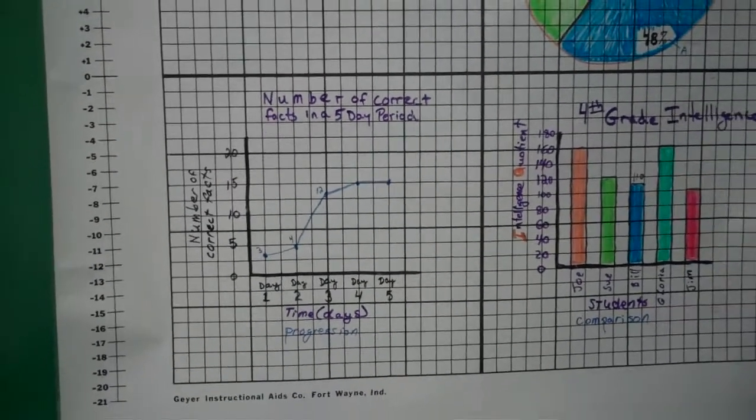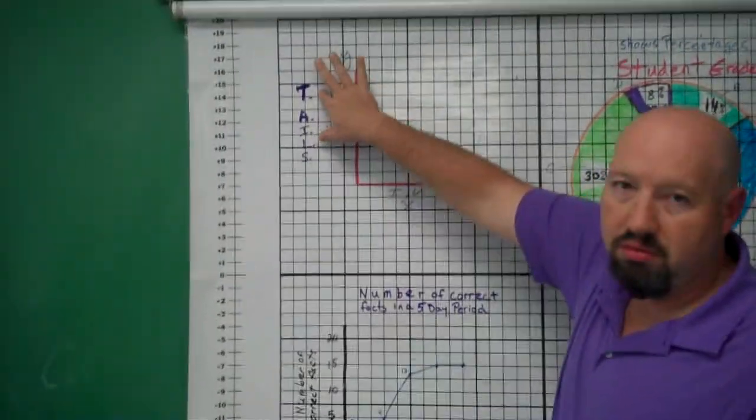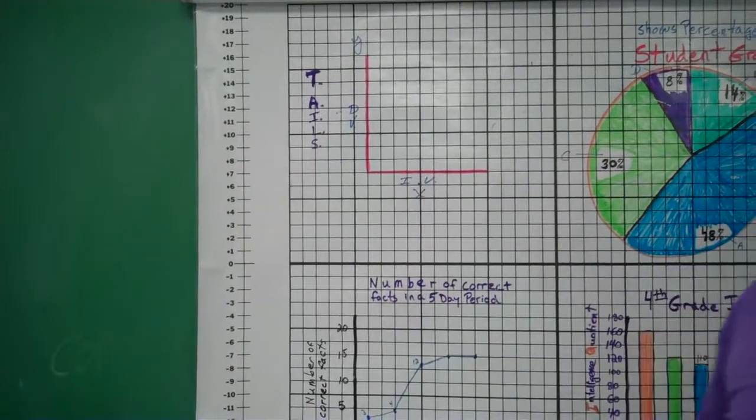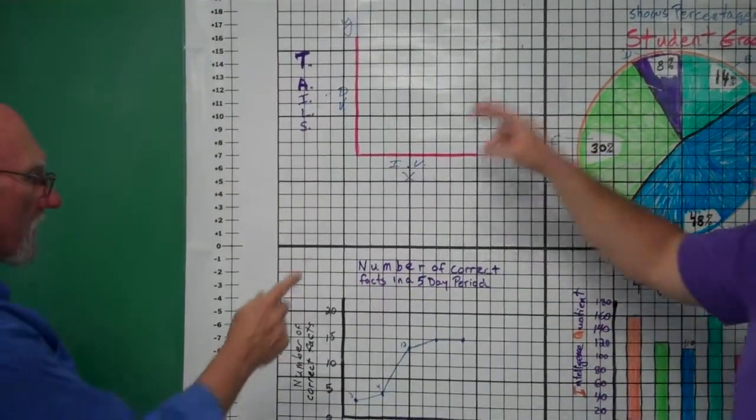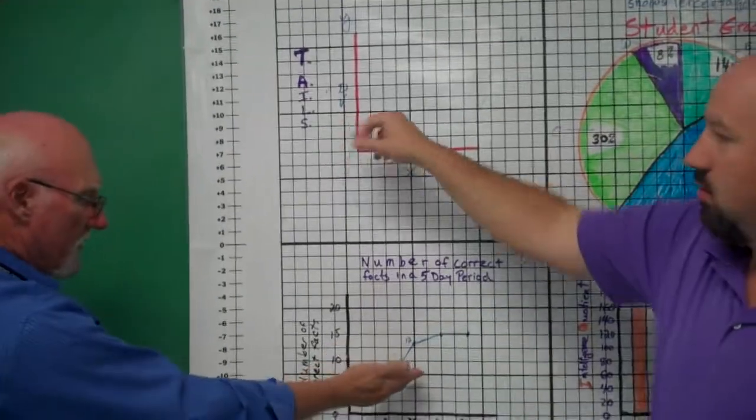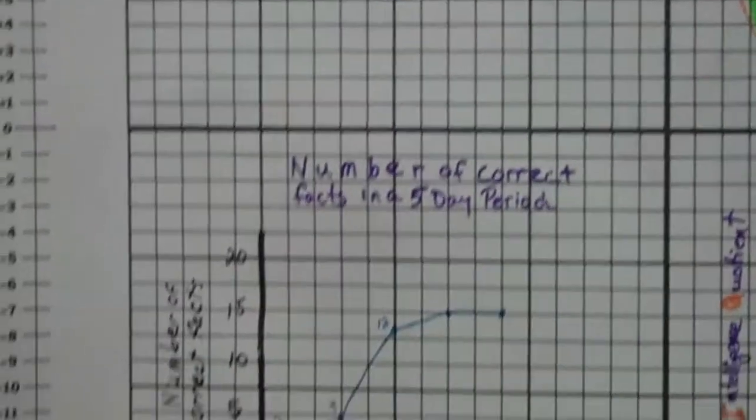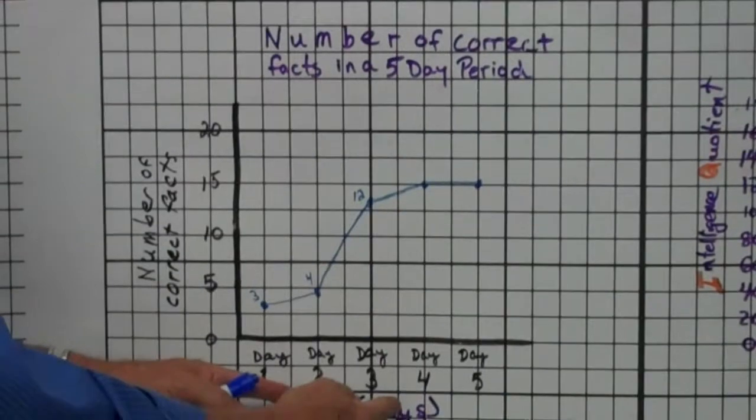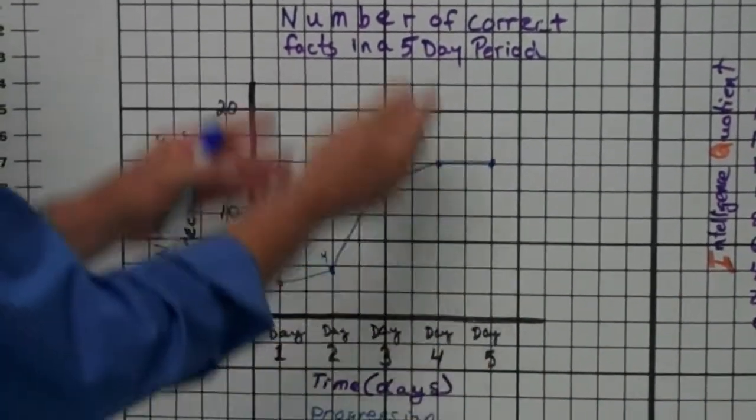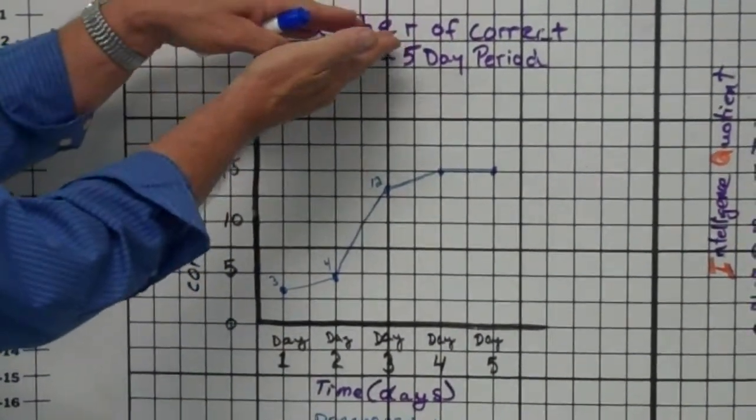So in conclusion, tails, always have a title. The title has to have some kind of relationship between the IV and the DV. Look at this one here. The number of correct facts over a five day period. You see how the title shows a connection between the two.